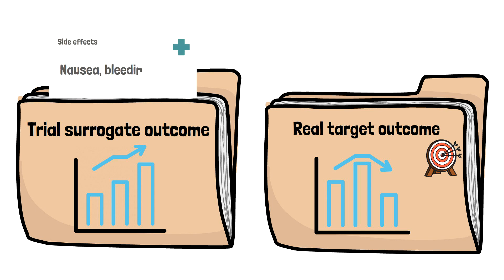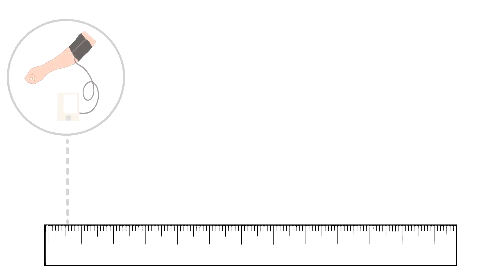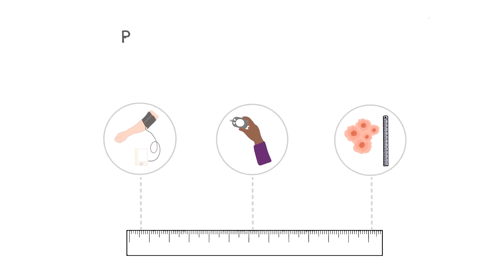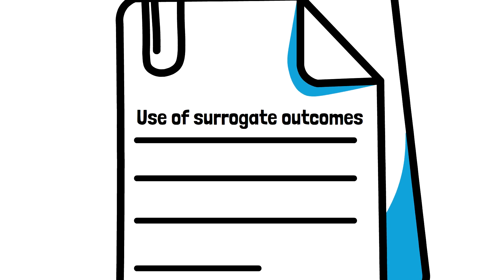Because of this concern, it's important that the use of surrogate outcomes in trials is linked to those which have been shown to be likely accurate predictors of real target outcomes. It is also important to ensure that patients are clearly informed about the use of surrogate outcomes in clinical trials and any associated risks or potential adverse reactions.